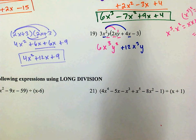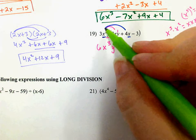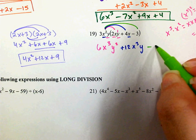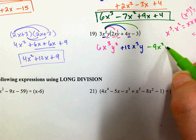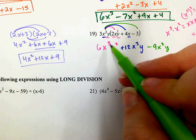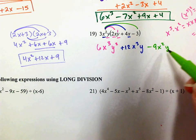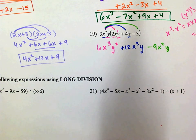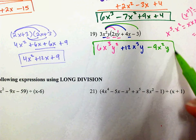Then I distribute to the negative 3: 3x squared times negative 3 is negative 9. There are no additional variables, so just x squared y. The three terms are 6x cubed y squared, 12x cubed y, and negative 9x squared y. None of those are the same, which means I cannot combine further and I'm done.